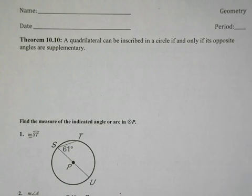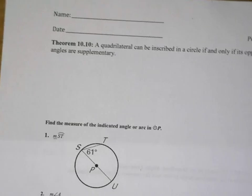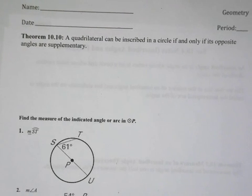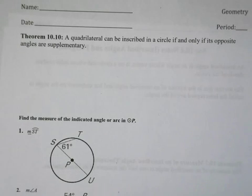Geometry students, welcome to the continuing series of videos on circles, polygons, and polygons inside of circles. In this video we are going to discuss and prove a result relating to quadrilaterals. This is Theorem 10.10: A quadrilateral can be inscribed in a circle if and only if the opposite angles are supplementary.